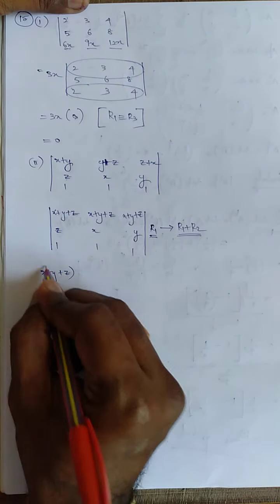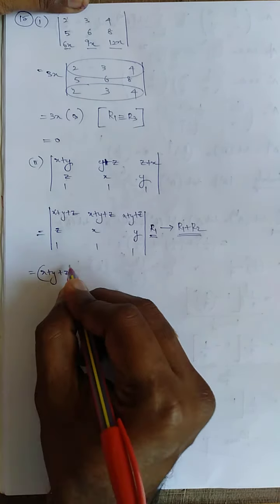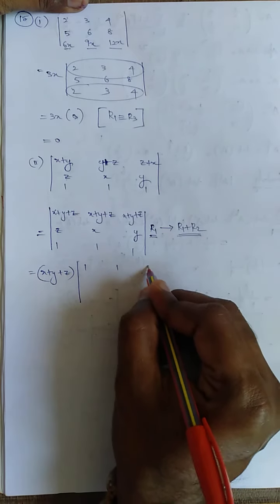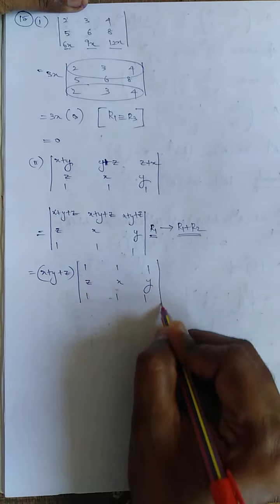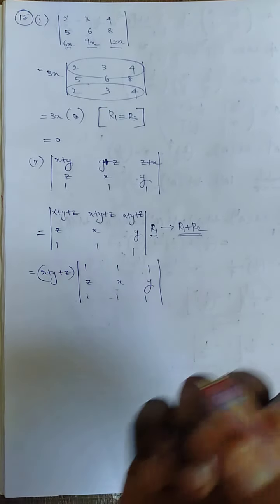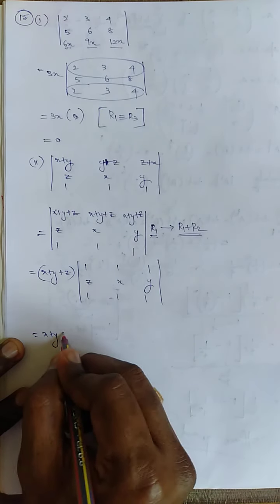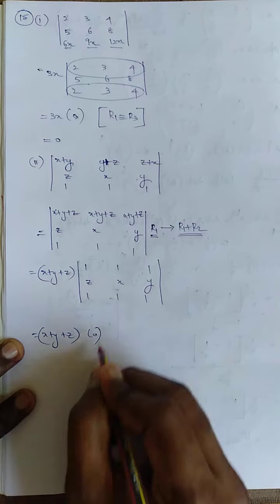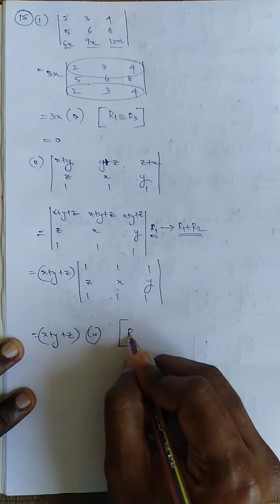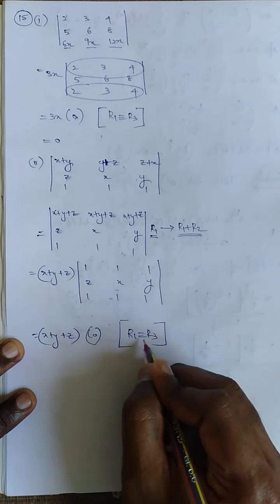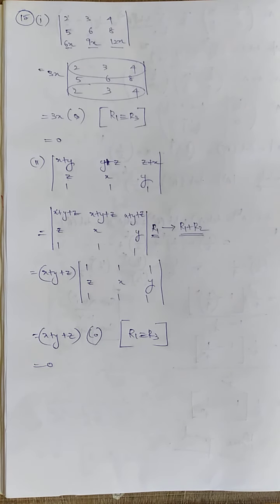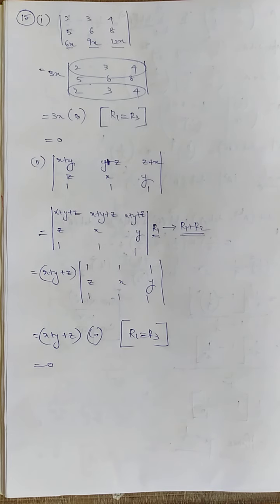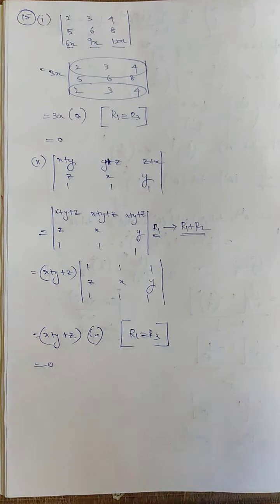After the row operation, I can take x plus y plus z common from R1. What it becomes is: 1, 1, 1 / z, x, y / 1, 1, 1. Since R1 is identical to R3, the determinant is equal to 0. So we have finished the 15th sum with the first and second sub-questions — both answers are 0.